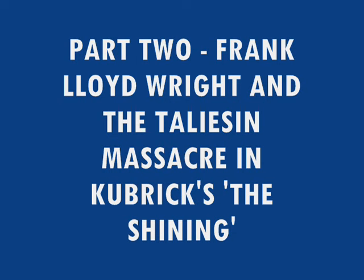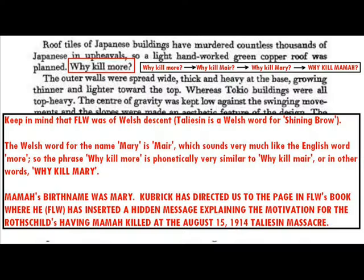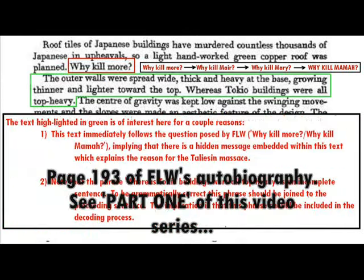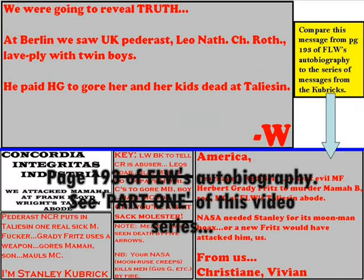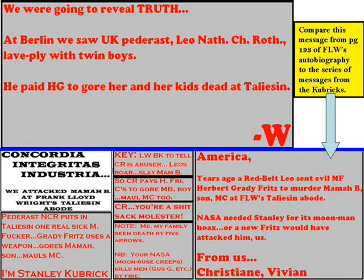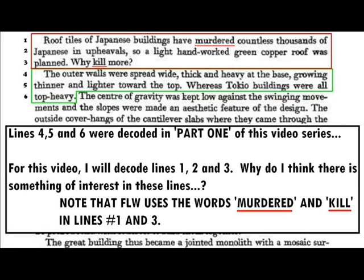This is part two of Frank Lloyd Wright and the Taliesin Massacre in Kubrick's The Shining. Recall that in part one, it was determined through an analysis of The Shining that Kubrick was trying to call our attention to page 193 of Frank Lloyd Wright's autobiography. In that video, I decoded a hidden message contained on that page. For this video installment, I'm going to continue my analysis of page 193. It turns out that there is another hidden message here to share with you.